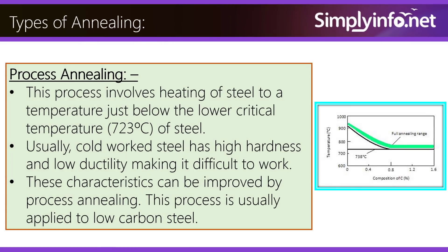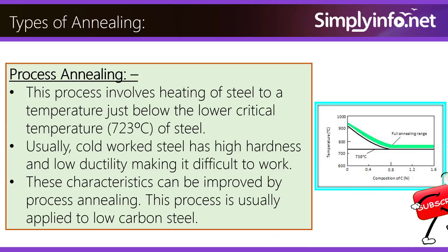Process annealing involves heating of steel to a temperature just below the lower critical temperature of 723 degrees Celsius. Usually cold worked steel has high hardness and low ductility, making it difficult to work. These characteristics can be improved by process annealing. This process is usually applied to low carbon steel.